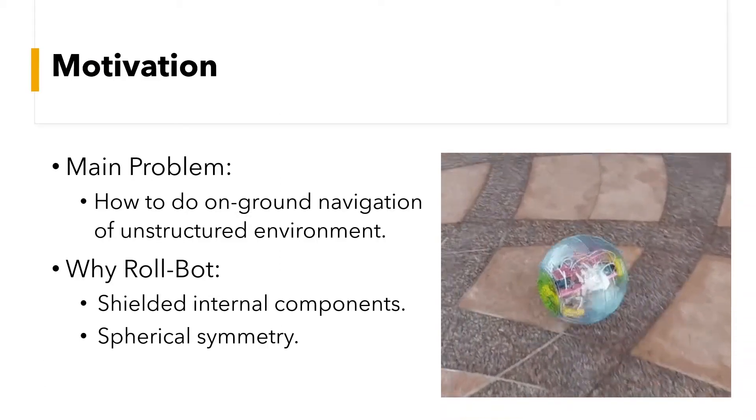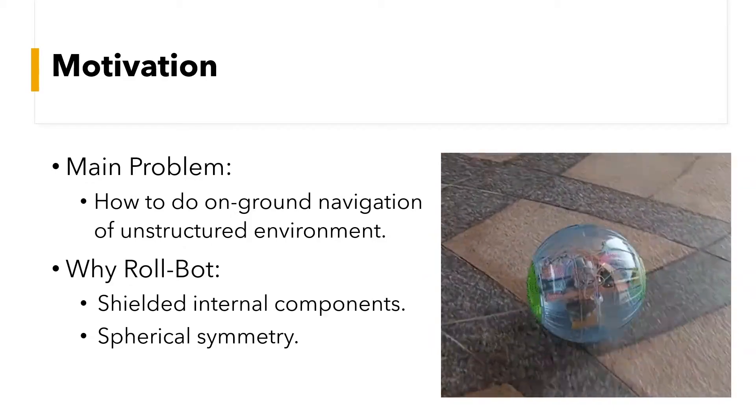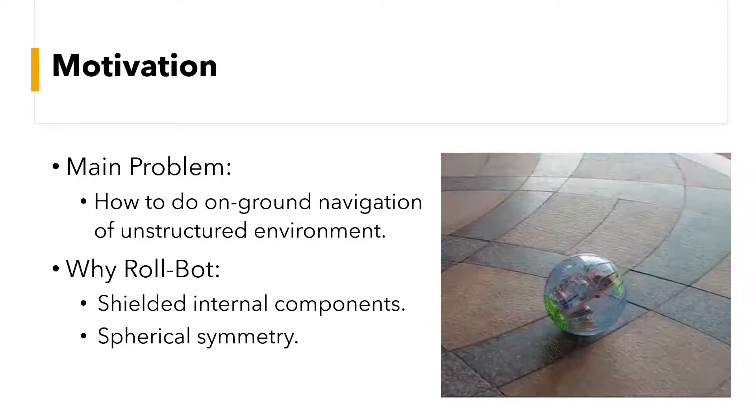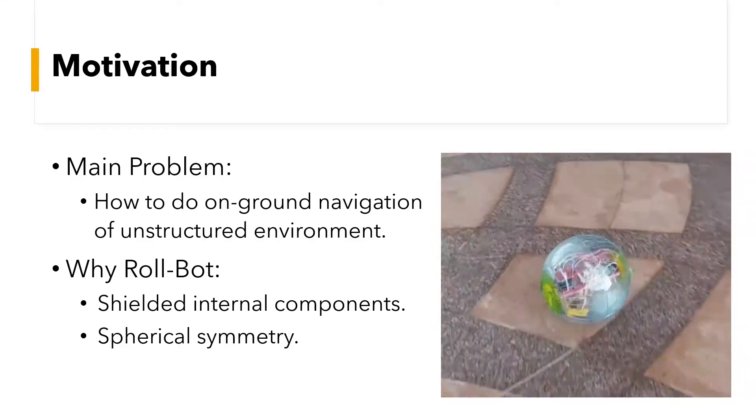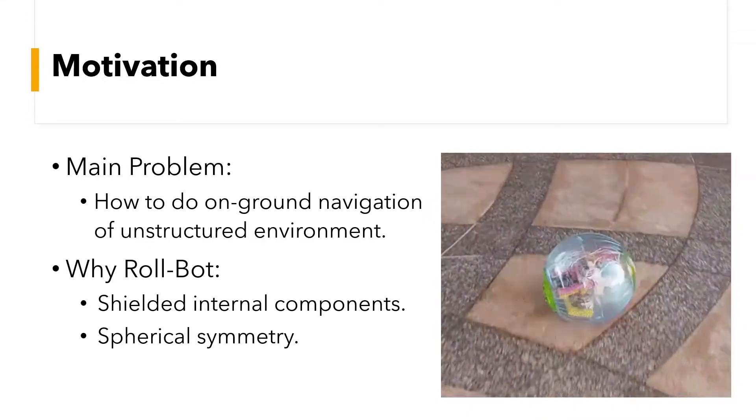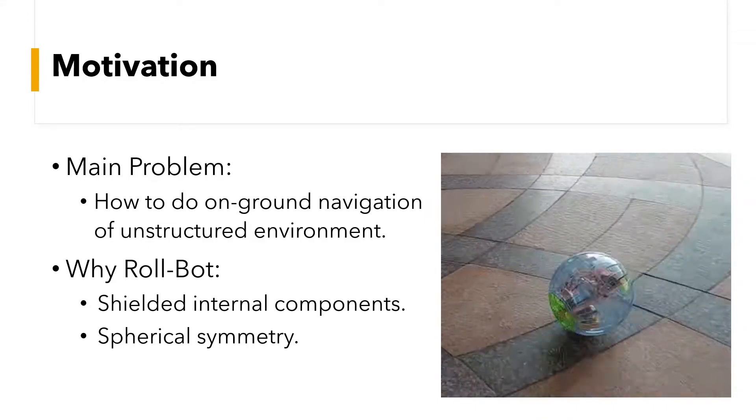There are two main advantages of using a spherical rolling robot. The first one is that all internal components are shielded from environmental effects such as dust and moisture. More importantly, we have spherical symmetry, which means that the robot doesn't have a specific orientation, namely,